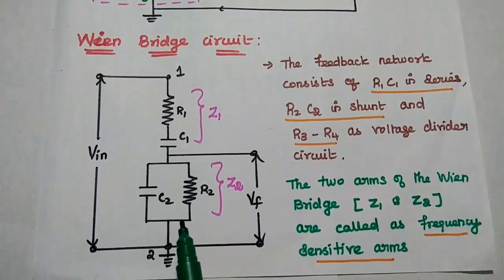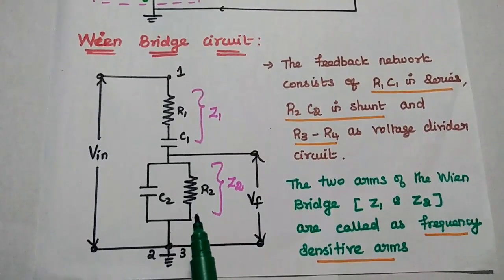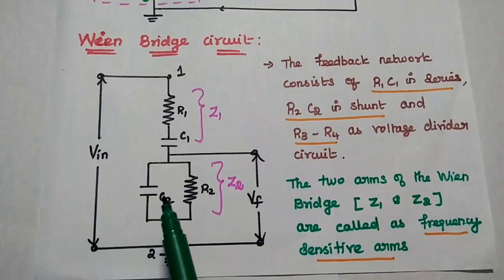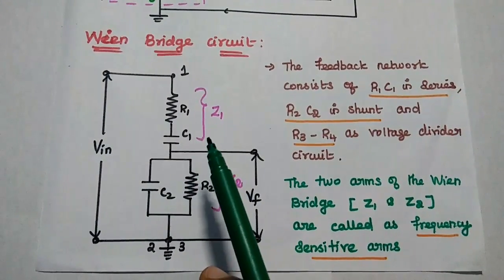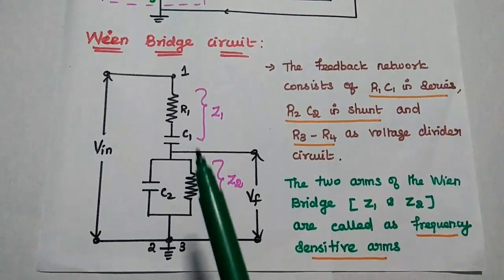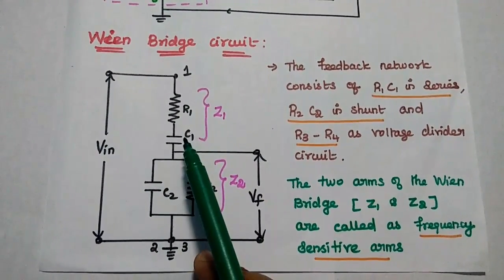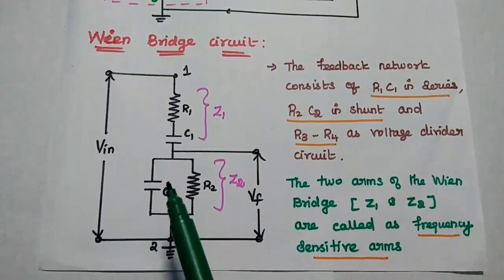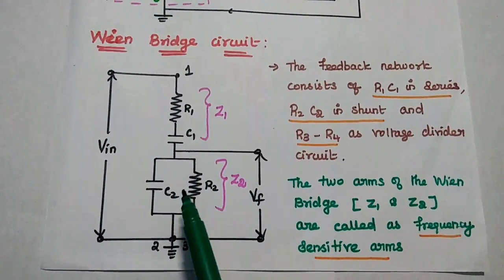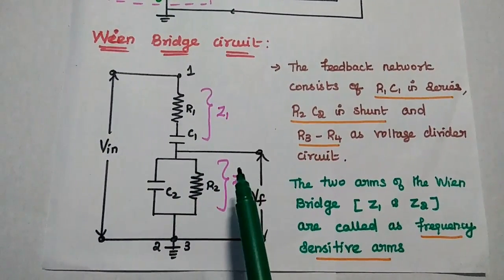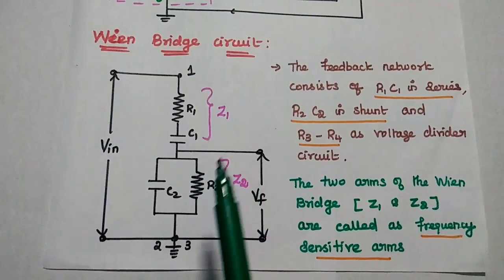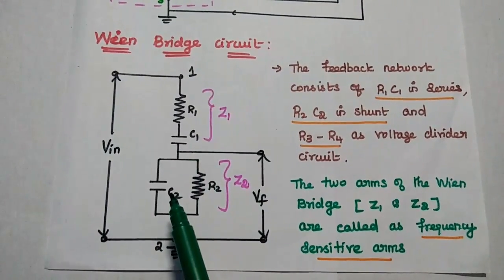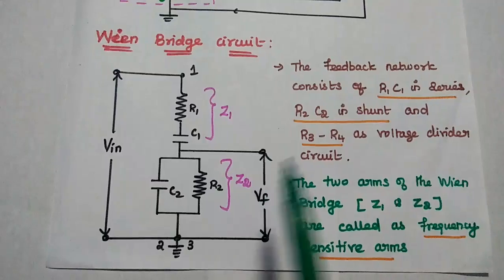These two arms of the Wainbridge circuit are called frequency-sensitive arms because they are used to determine the frequency range. By varying the values of C1 and C2 simultaneously, we can vary the frequency range. For that, we can connect C1 and C2 on a common shaft.